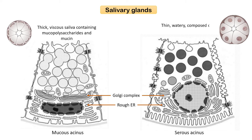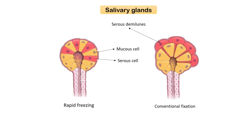Serous acinar cells produce thin watery secretion composed of zymogen granules containing more proteins. Another feature commonly seen in histological preparations of salivary glands is serous demilunes, which are artifacts of the traditional fixation method. In electron microscopy following rapid freezing, serous cells extend from the basal lamina to the lumen. In routine preparations using immersion fixation, swollen mucus cells force out the serous cells, leaving small remnants of cytoplasm between the mucus cells, giving the appearance of serous demilunes — but this is merely an artifact.